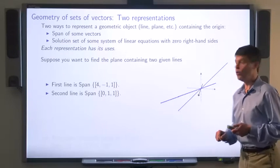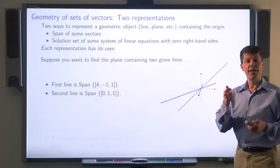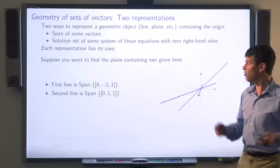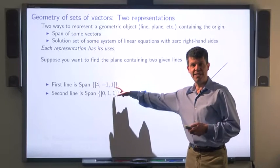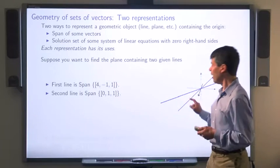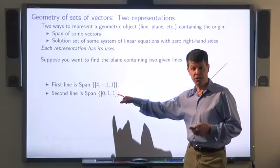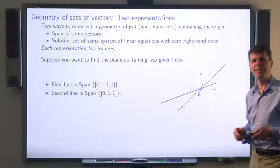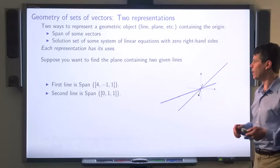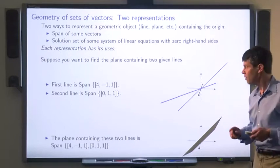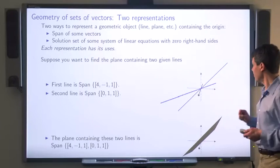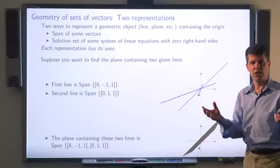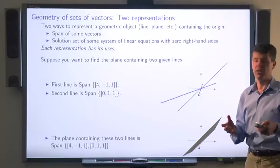Each of these representations has its uses. For example, suppose you have two lines and you want to find the plane that contains those two lines. The first line is the span of one vector, the second line is the span of another vector. How would you find the plane containing both of them? It turns out it's the span of those two vectors. This representation is convenient for finding the geometric object containing two smaller-dimensional geometric objects.